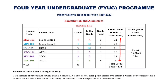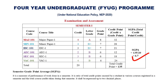Thus the total credit point is 32 + 28 + 21 + 12 + 18 + 24 = 135. The SGPA is calculated by dividing the total credit point by the total number of credits in that semester. In this example, SGPA = 135 ÷ 20 = 6.75.